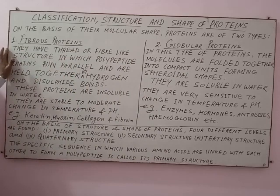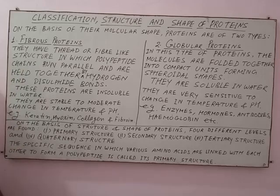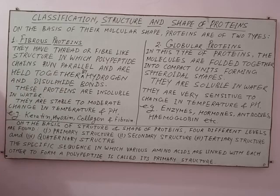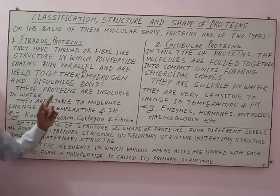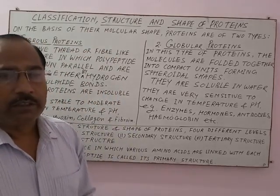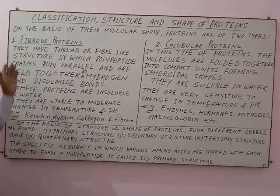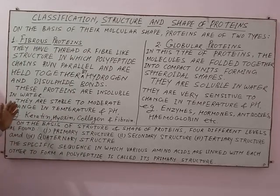In fibrous proteins, they have a thread-like or fiber-like structure, in which polypeptide chains run parallel and are held together by hydrogen bonds and disulfide bonds. Since these are strong intermolecular forces of attraction, fibrous proteins are insoluble in water and stable to moderate changes in temperature and pH.